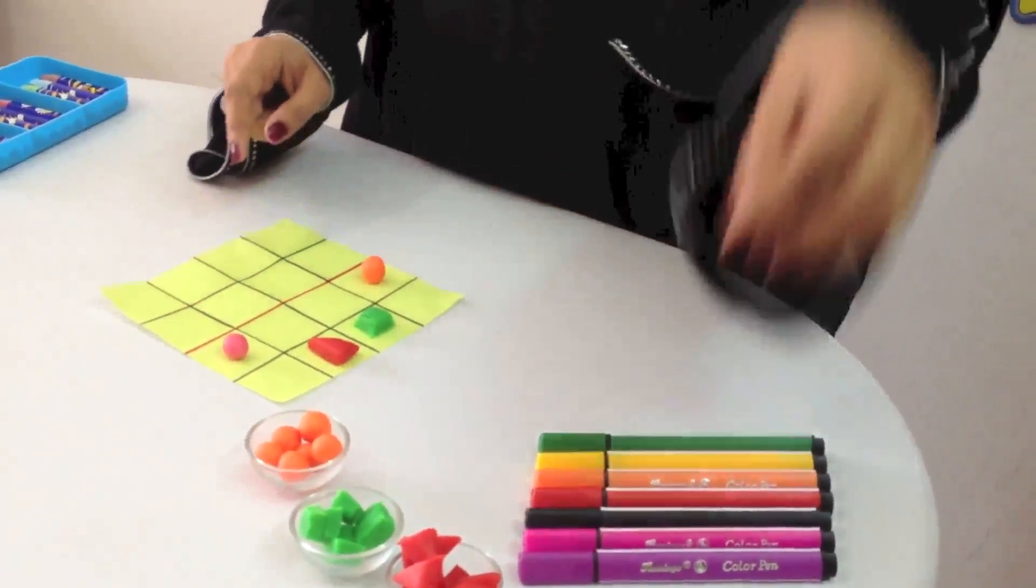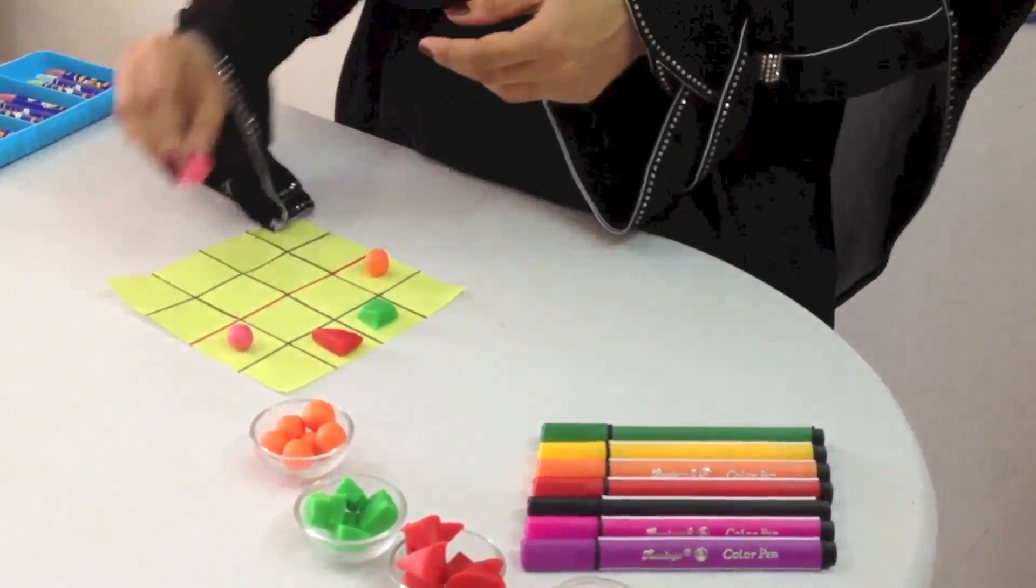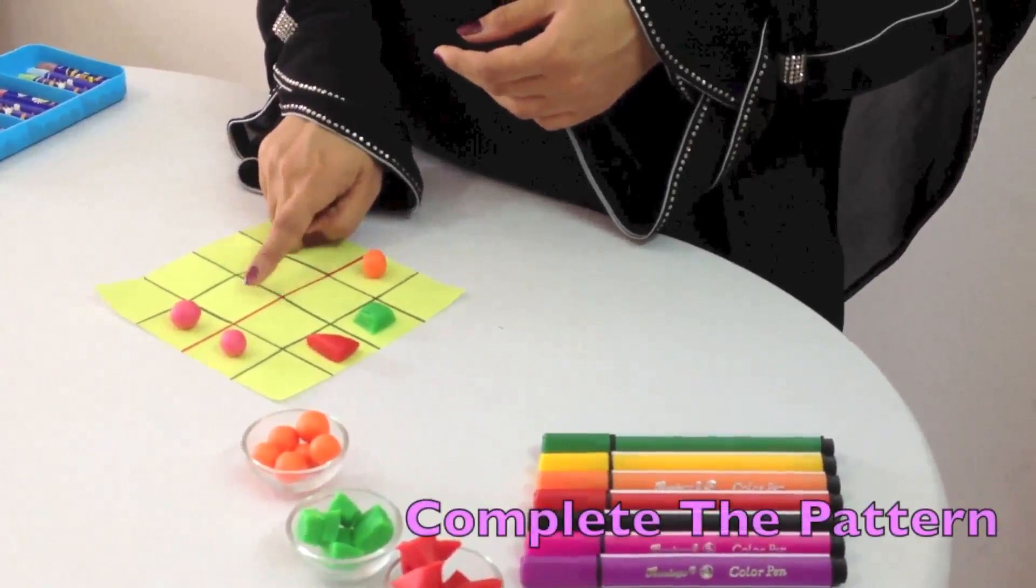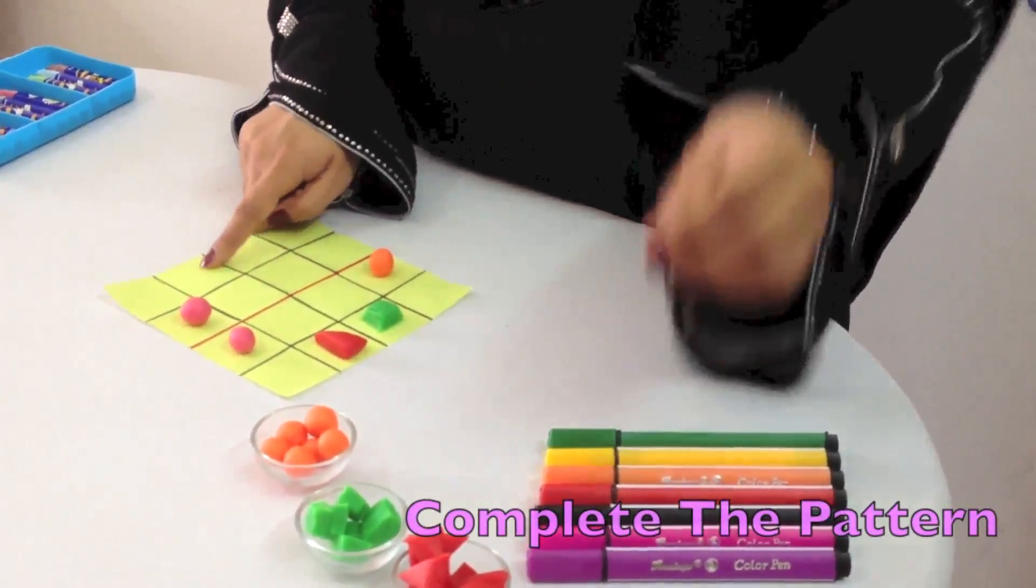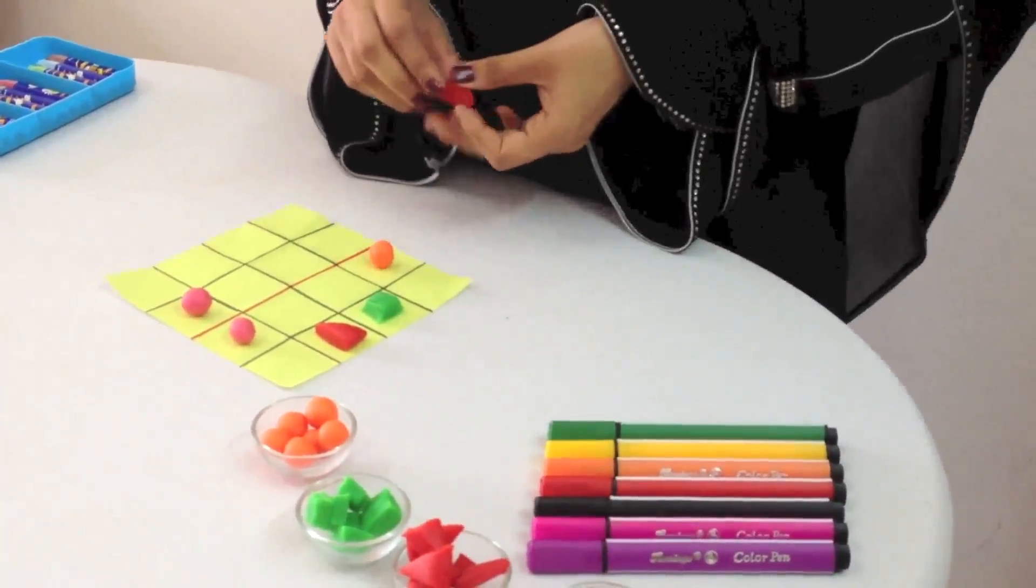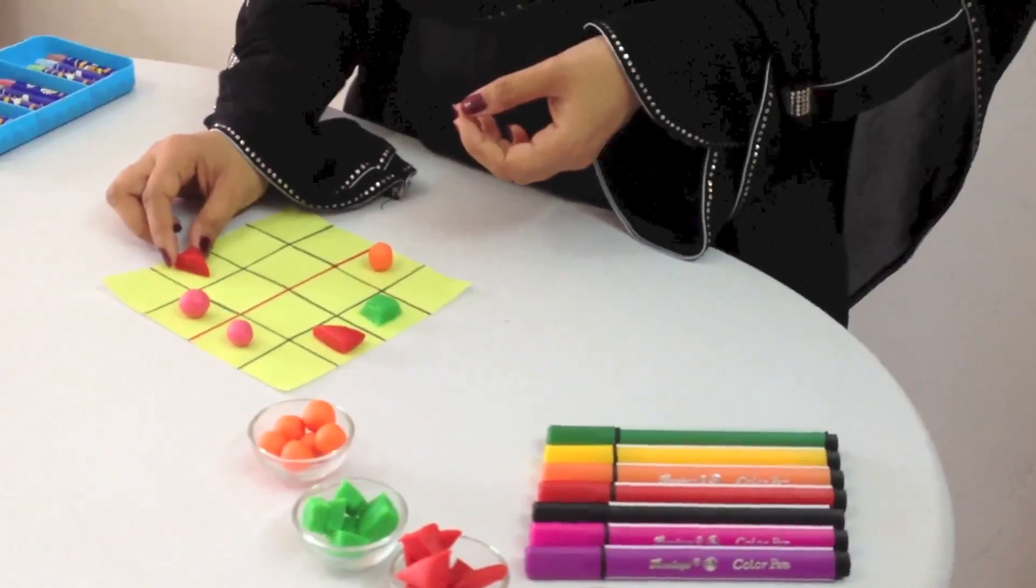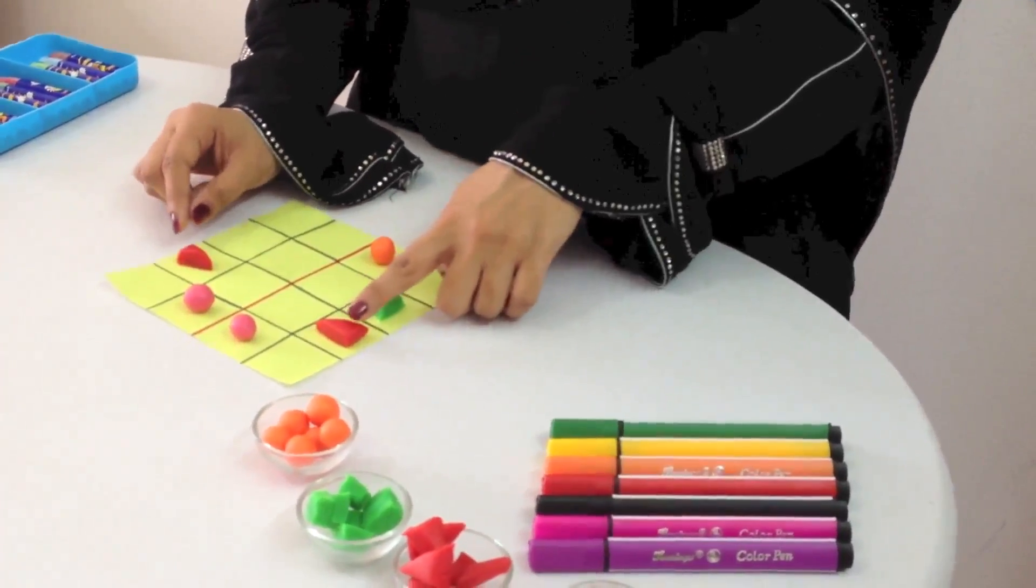In the square we can see a pink ball. We are going to put the same on the other side so it's symmetrical. This is empty, so this one is also going to stay empty. In this square we are going to put a triangle the same way. It should be like a mirror image.